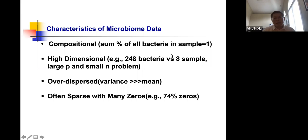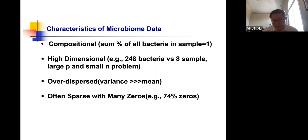In summary, microbiome data is compositional—the sum of all bacterial percentages equals 100%. Microbiome data is high-dimensional: in our example we have 248 bacteria but only 8 samples, which is called the large-p, small-n problem. Microbiome data is over-dispersed, meaning the variance is very large relative to the mean. Microbiome data is sparse, with many zeros—for example, 44% zeros in the dataset we just showed.